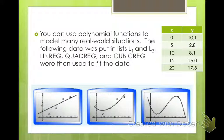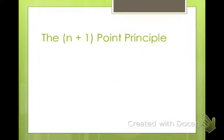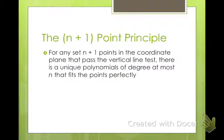Which one of these best fits the data? In this instance, it's going to be the cubic regression. The n+1 point principle says that for any set of n+1 points in the coordinate plane that pass the vertical line test — meaning they are a function — there is a unique polynomial of degree at most n that fits the points perfectly. So if there are four points, at most x to the fourth would best fit those points.